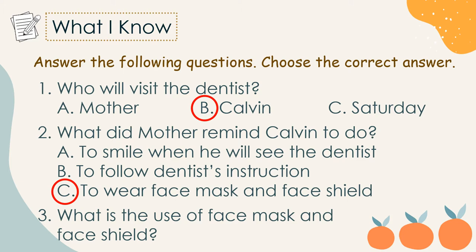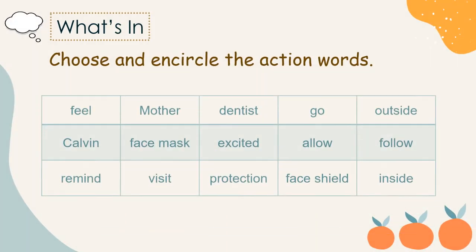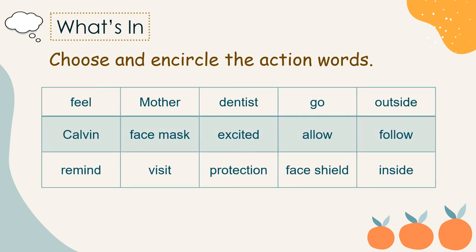Why is it important for Calvin to wear a face mask and face shield? Of course, to protect us from the virus, because COVID-19 is spreading — maybe in the air or from other persons. When we wear a face mask and face shield, it protects us from getting the virus. Now for 'What's In' — choose and circle the action words.